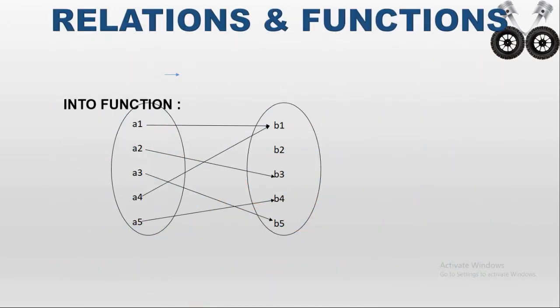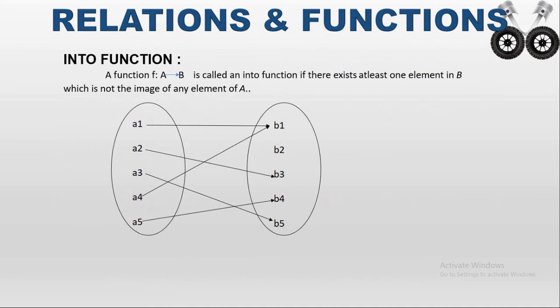Next is an into function. Any function is said to be an into function if at least one element in B does not have a pre-image from any element of A. Consider set A and set B — B2 is an element in B which does not have a pre-image in A. That is why this function is called an into function. The main point is: the range of F is a proper subset of the co-domain of F.